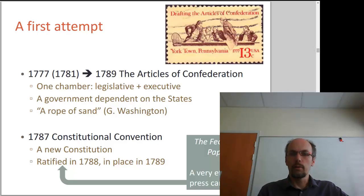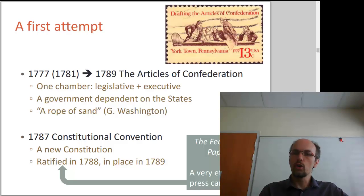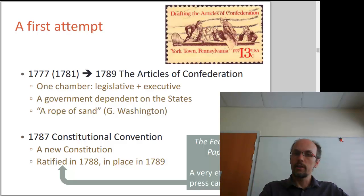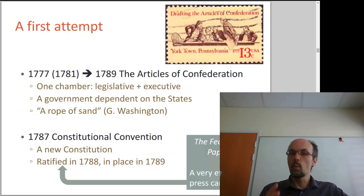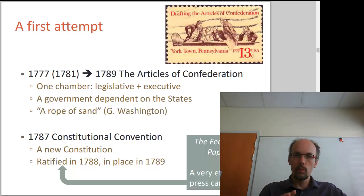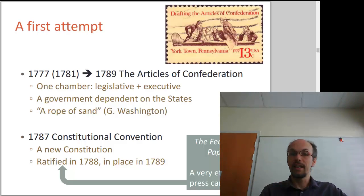The Articles of Confederation were very interesting because they exemplified everything that could be wrong with a system of government. They were created in 1777, ratified in 1781, and lasted until 1789. The problem with the Articles of Confederation was that they created a very weak form of government: one chamber, no president — one chamber in charge of all duties, making the laws (the legislative power) and applying the laws (the executive power).